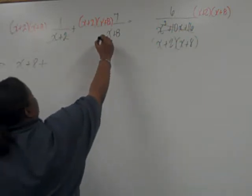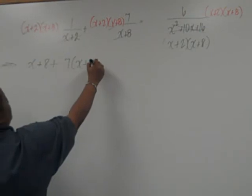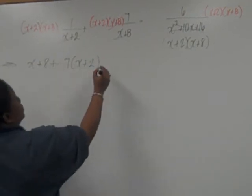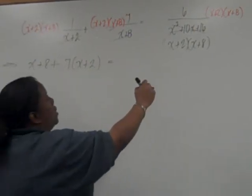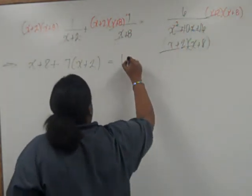Here, x plus 8 cancels, leaving us with 7 times x plus 2. And here, both factors cancel, leaving us with just 6.